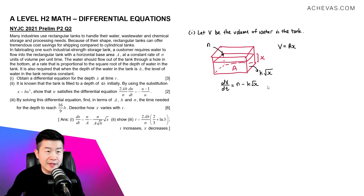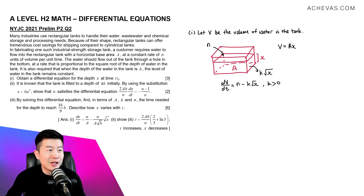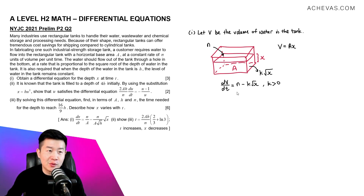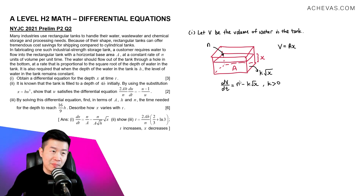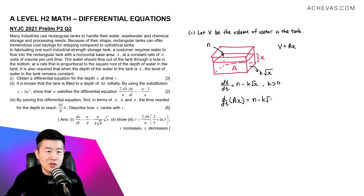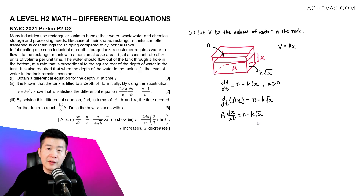The k we have introduced should be a positive number, since we are defining input and output using our own plus and minus signs. This is the differential equation so far, but the question wants a differential equation relating x and t. Since V is Ax, we replace V: d/dt of (Ax) equals n minus k√x. Since A is a constant, this gives us A dx/dt = n minus k√x.